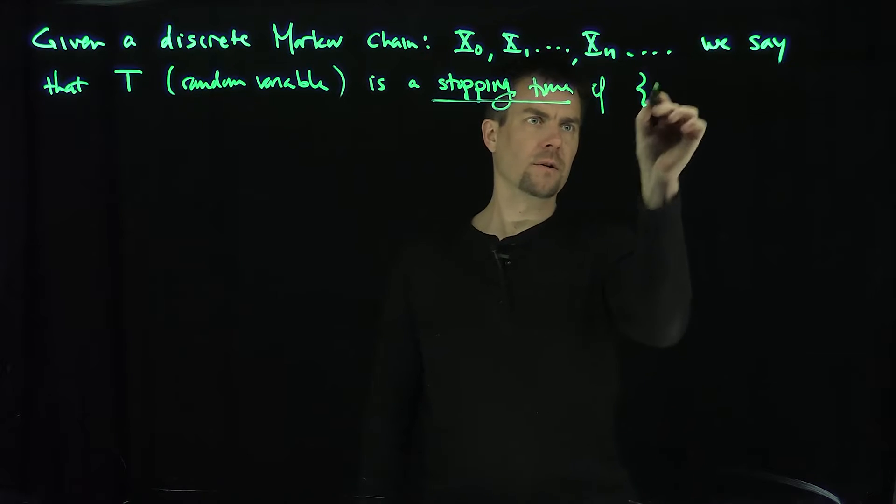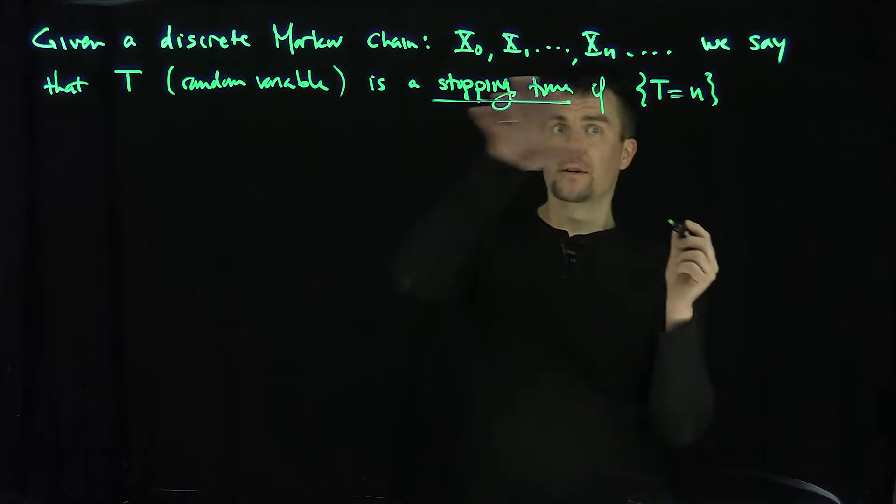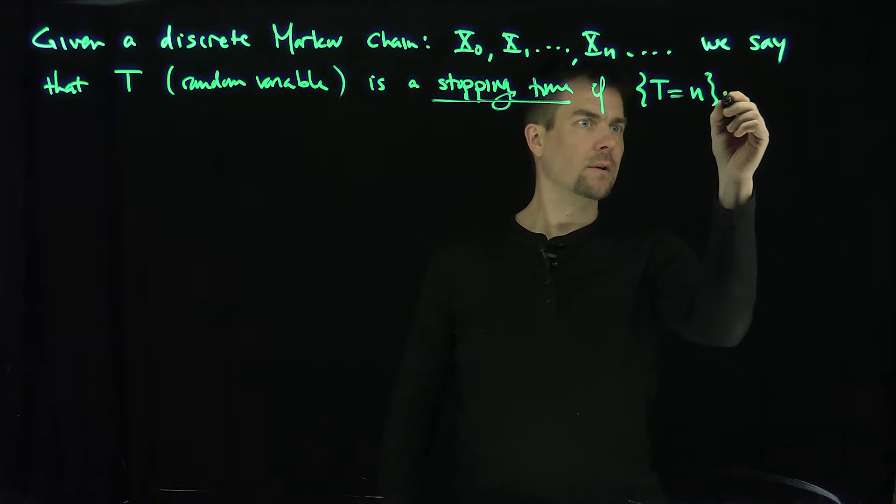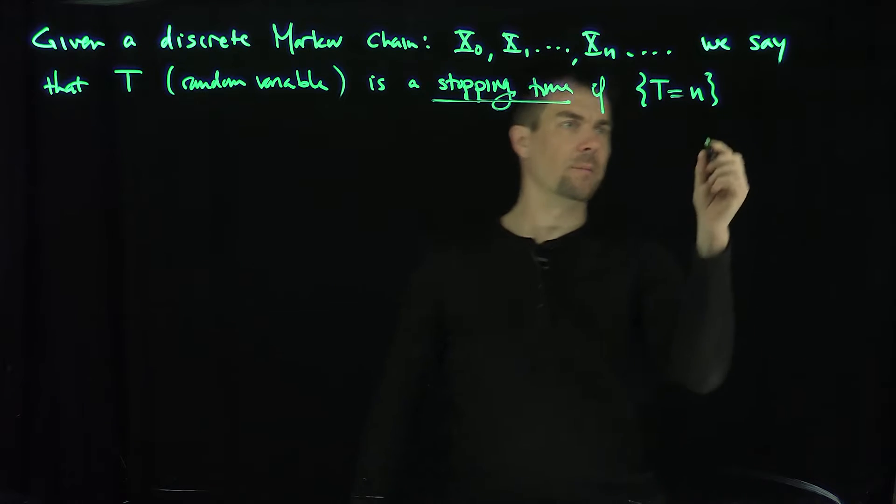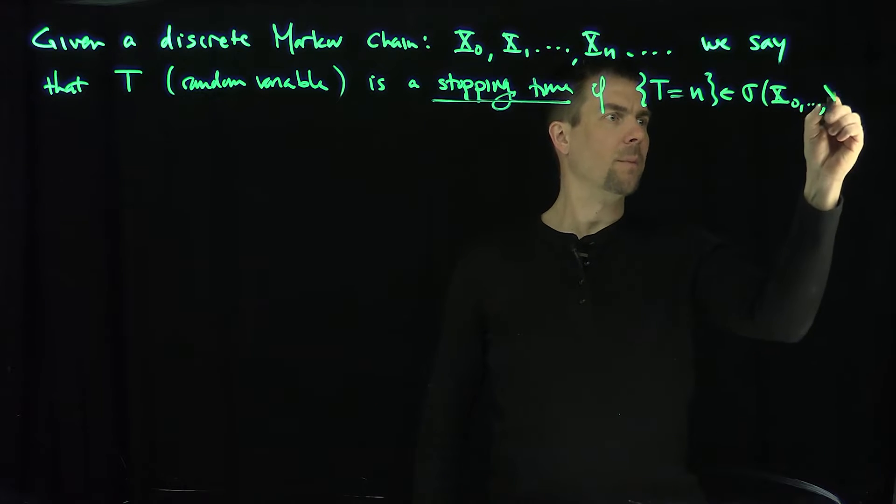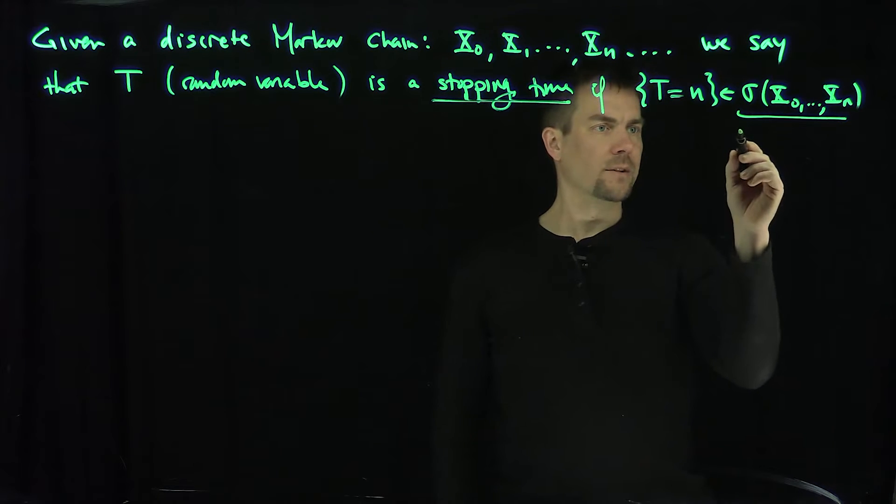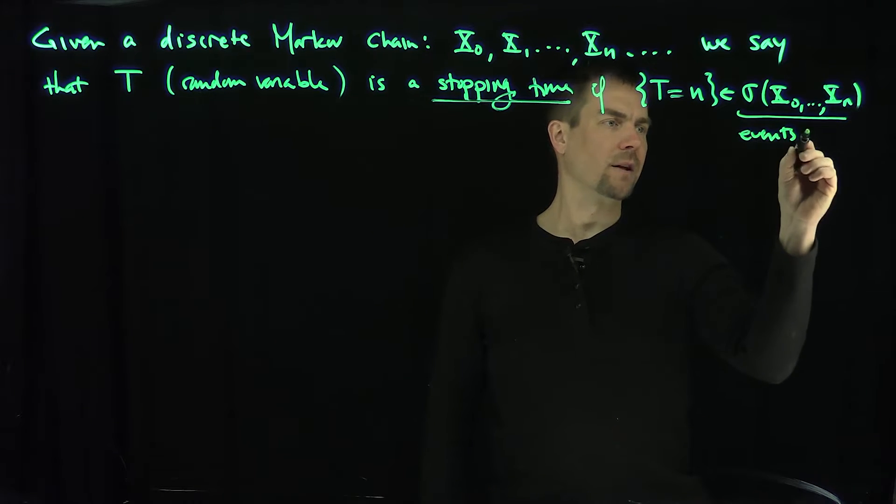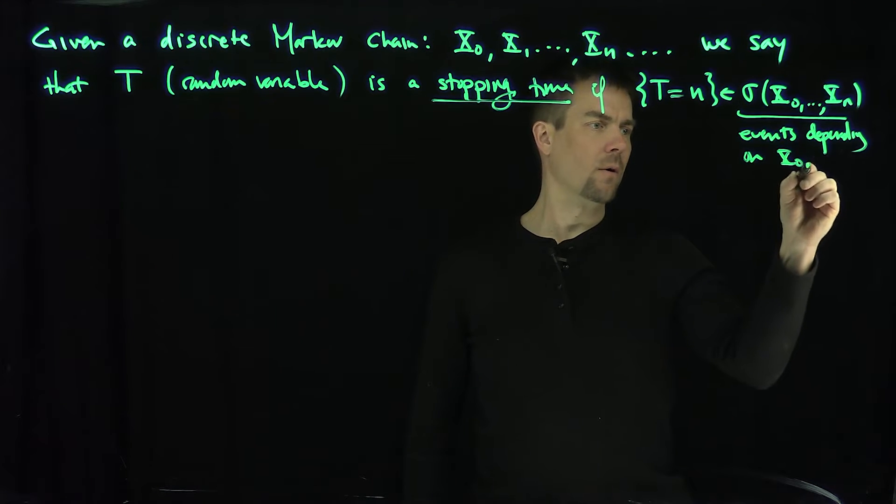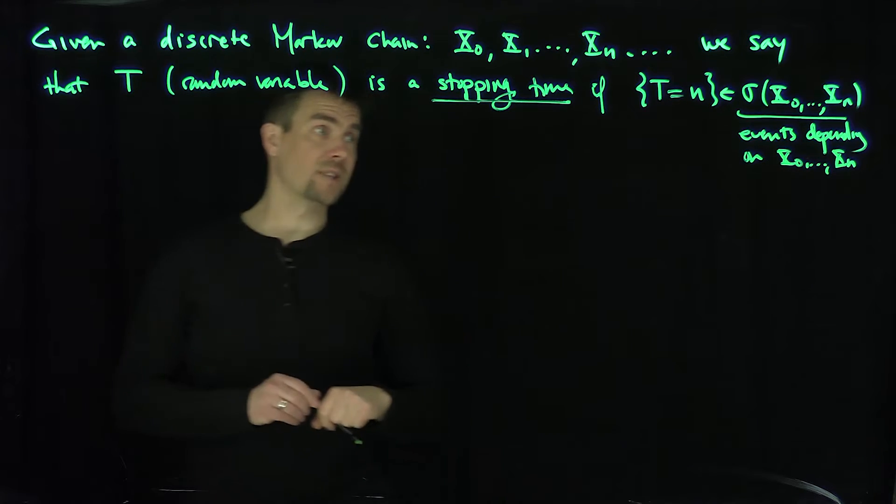If the event T equals n, that event can be determined just by information from these x's contained in the information generated by x0 up to xn. And that's just the information from all events depending on x0 up to xn, all pre-images of those events. That's what a stopping time is.